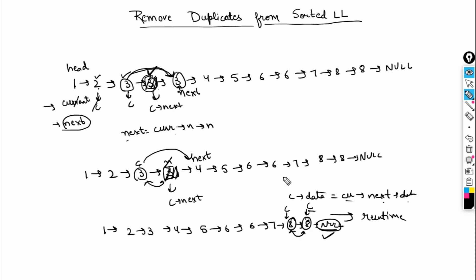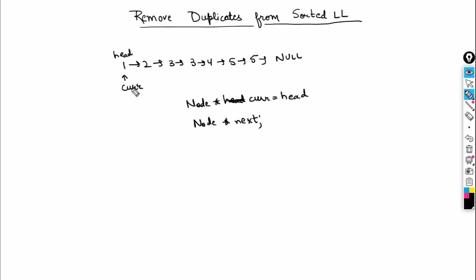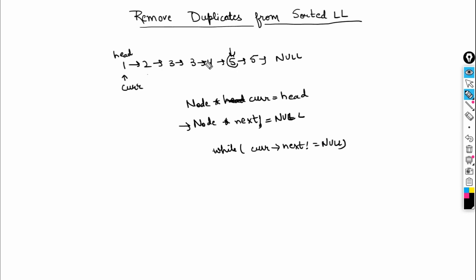Let's now discuss the algorithm in detail. First, we take a current variable pointing at the head node. We also take a next variable, initially null. The condition for our while loop is: while current's next is not equal to null — so we iterate only until the second-last node. Inside the loop, we check if current's data is equal to current's next data.